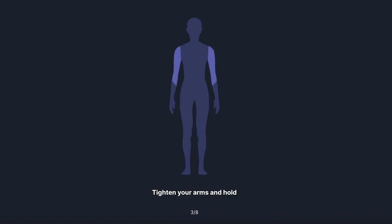With your arms straight at your side, tighten your arm muscles for 5, 4, 3, 2, 1. Now relax your arms for 5, 4, 3, 2, 1.